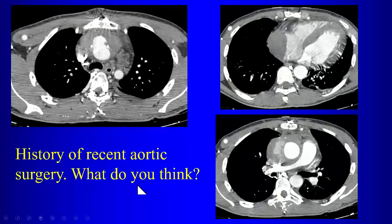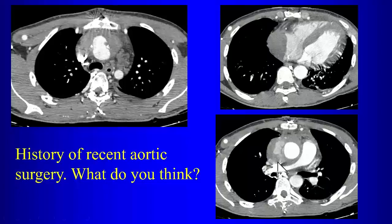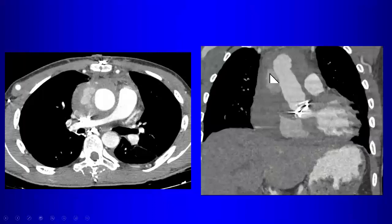In a patient with recent aortic surgery, one must look carefully for hematoma around the ascending aorta — which can be normal in a fresh post-operative patient — but also for contrast extravasation indicating active bleeding from the anastomosis. Graft dehiscence presents as collections of contrast outside where the graft should be, associated with hematoma and potentially sternal dehiscence. Graft infection should be suspected if there are abnormal collections of air more than two weeks after surgery.